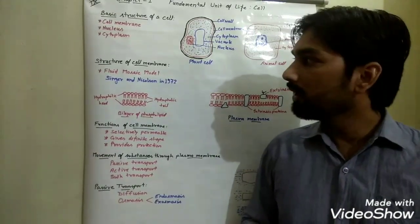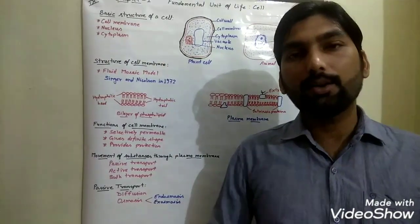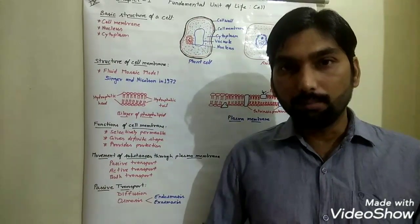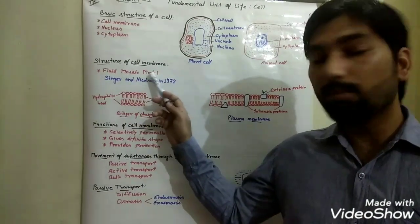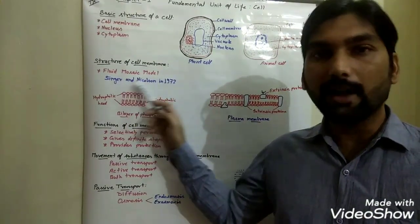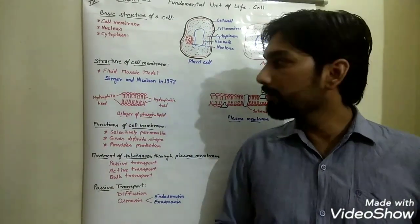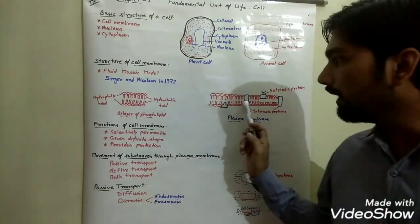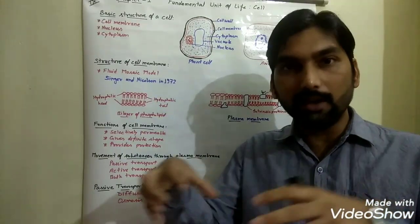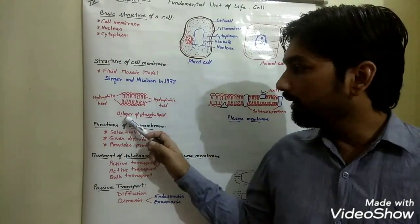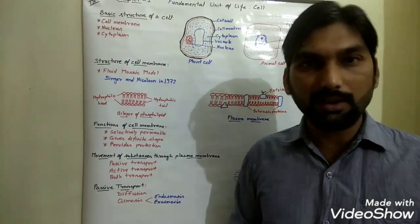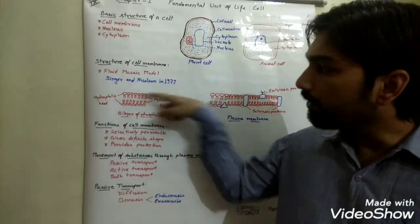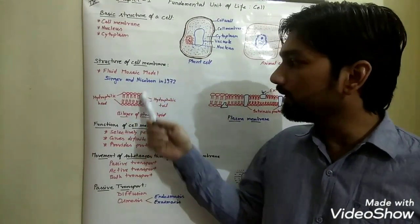So one by one we will see all these basic structures of a cell. Starting from the cell membrane — a variety of theories and models were proposed by scientists to explain its structure, but the most accepted model is the fluid mosaic model, given by two scientists Singer and Nicholson in 1972. According to this model, the cell membrane is made up of a bilayer of phospholipids and proteins arranged in a mosaic-like arrangement. Lipids are any natural complex substances like oil which do not dissolve in water.